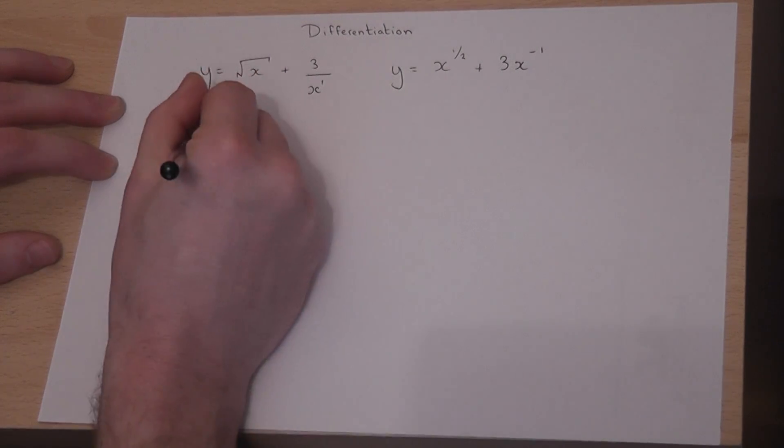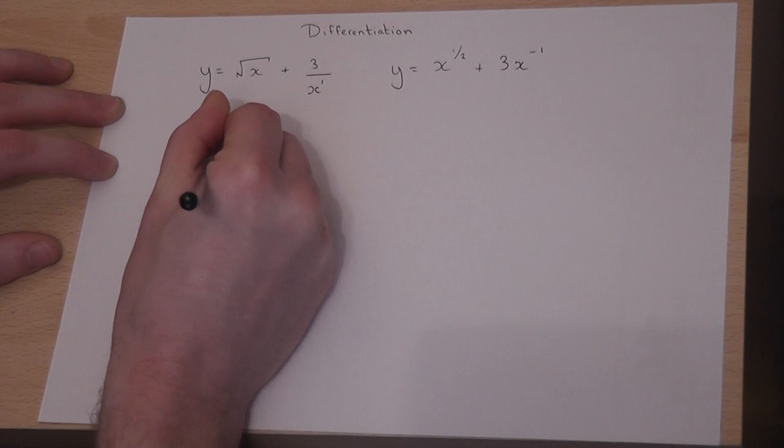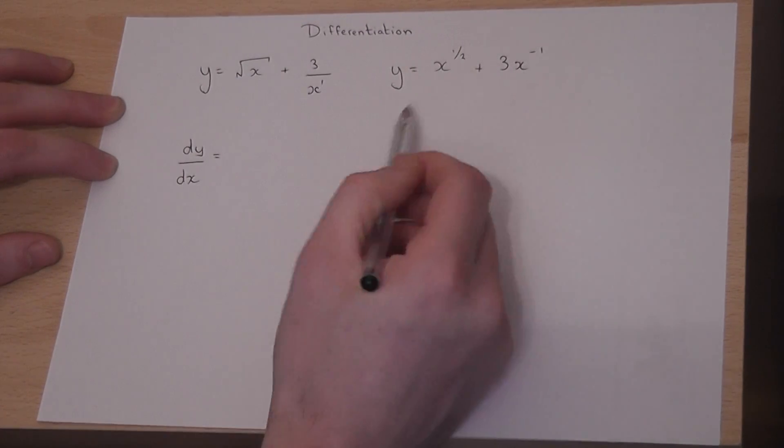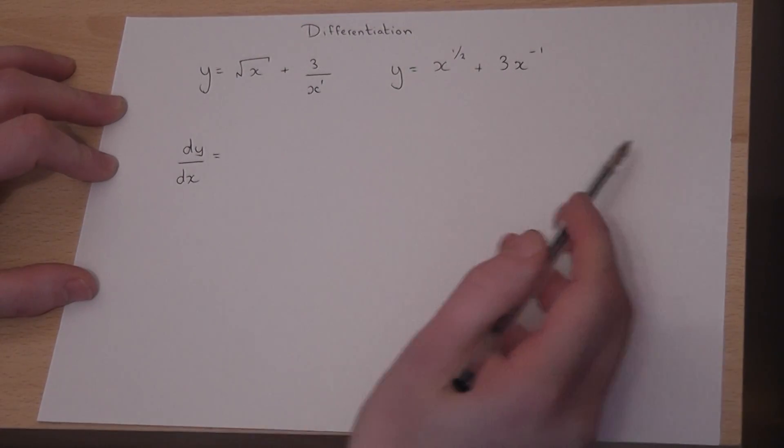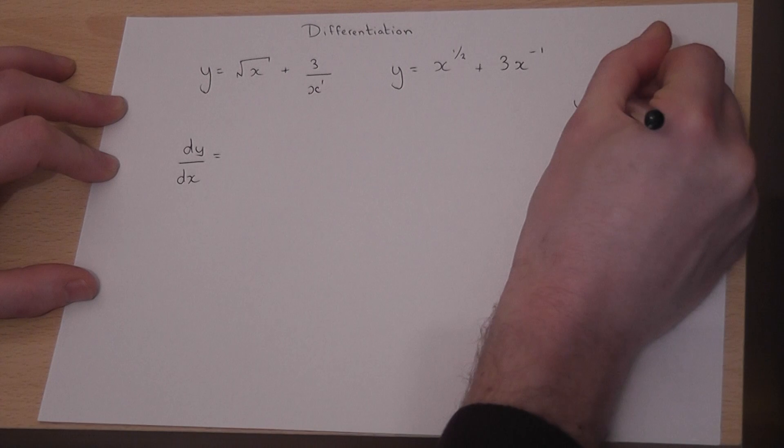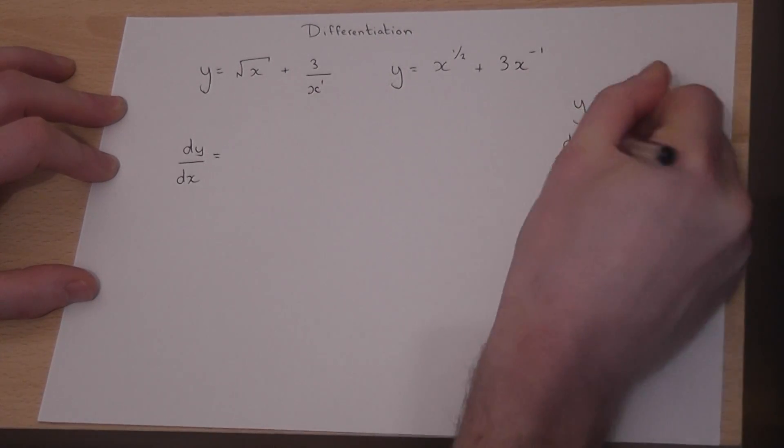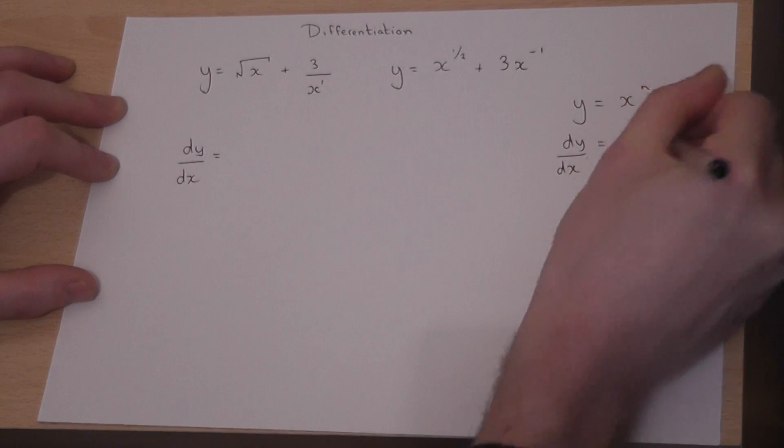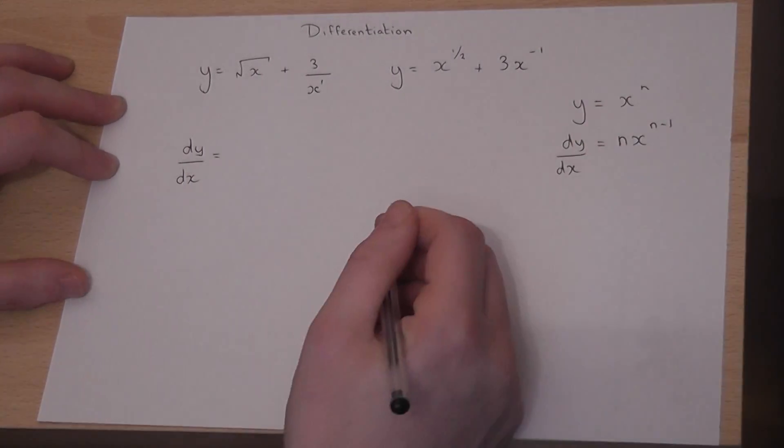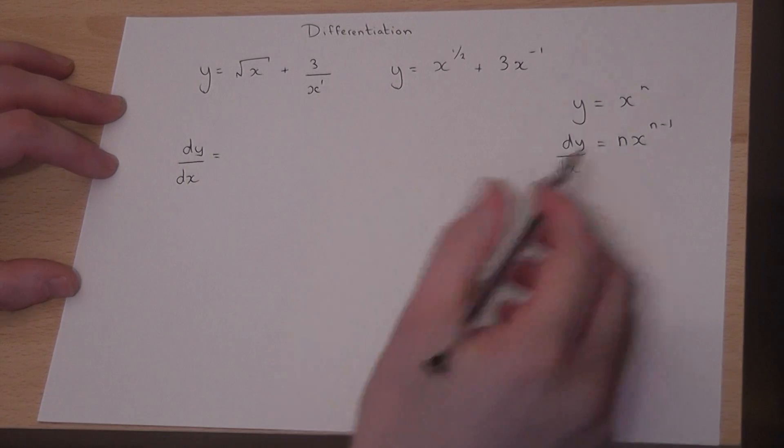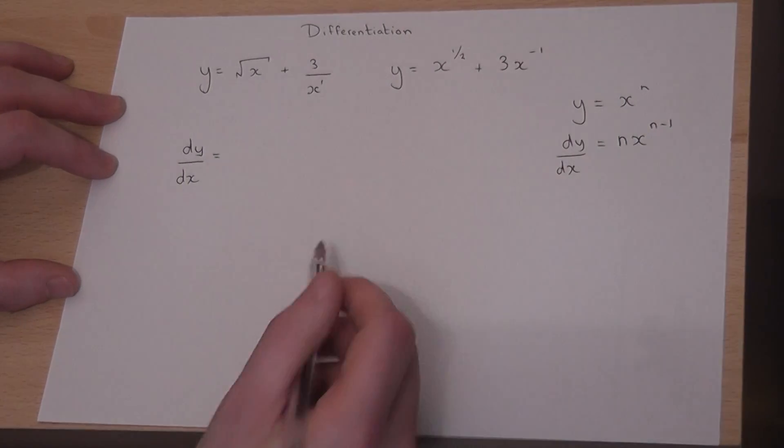So we can now use our normal rules of differentiation to differentiate both terms separately. Now we know that if y equals x to the power of n, then dy by dx is n lots of x to the power of n minus 1. That is the general rule.